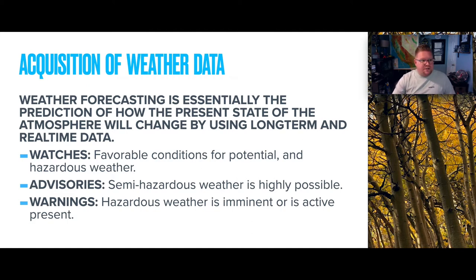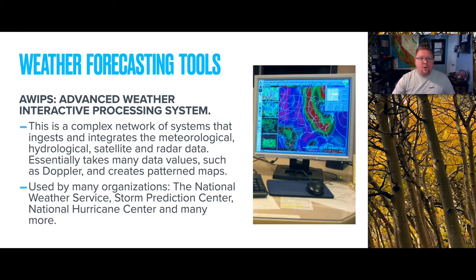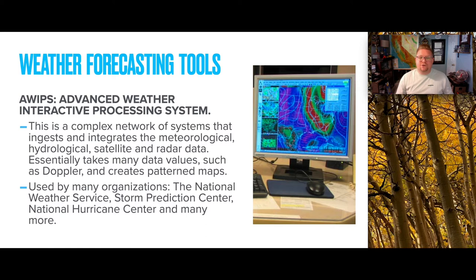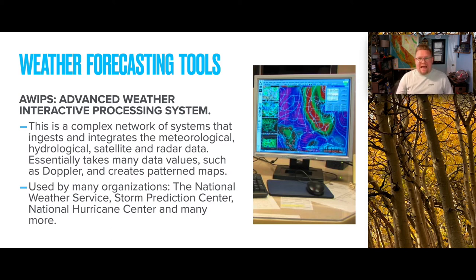The next part looks specifically at weather forecasting tools. There are lots of different tools utilized for forecasting, but we'll talk about just a few. The first is called AWIPS — the Advanced Weather Interactive Processing System. This is a complex network of systems that ingest and integrate meteorological, hydrological, satellite, and radar data. It takes all of these data values, such as Doppler, and creates pattern maps.